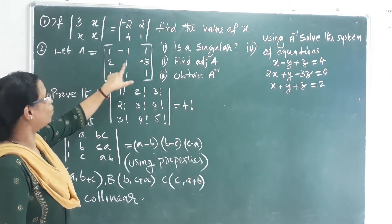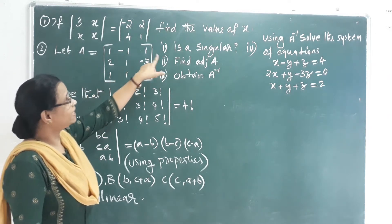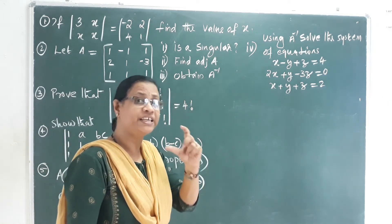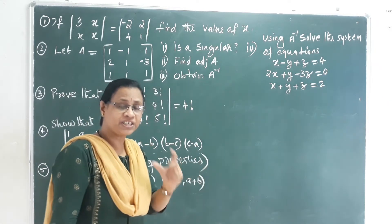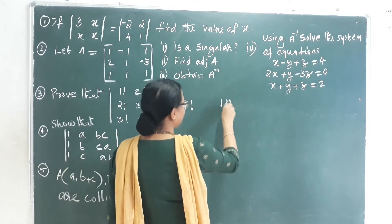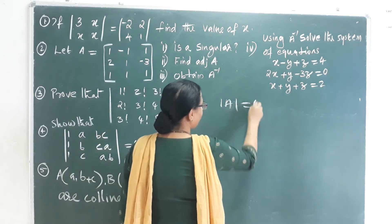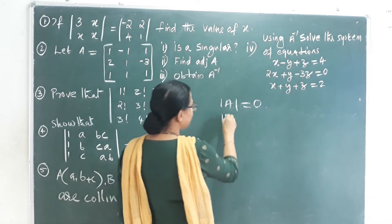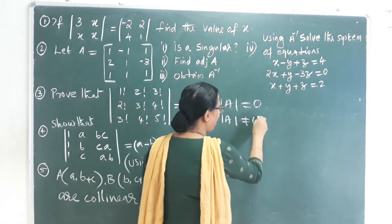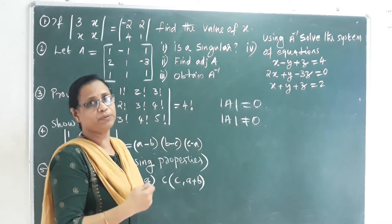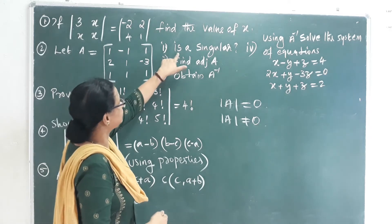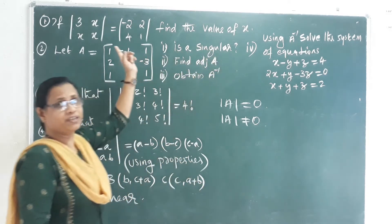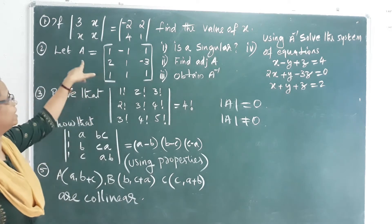Next question: Let A equal to the matrix with entries 1, negative 1, 1, 2, 1, negative 3. Is it singular? For a single value, we find determinant A. If determinant A equals 0, we call it a singular matrix. If determinant A is not equal to 0, we call it a non-singular matrix. We expand the determinant to determine which it is.